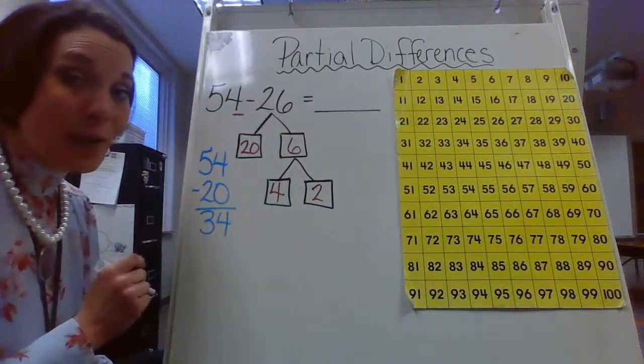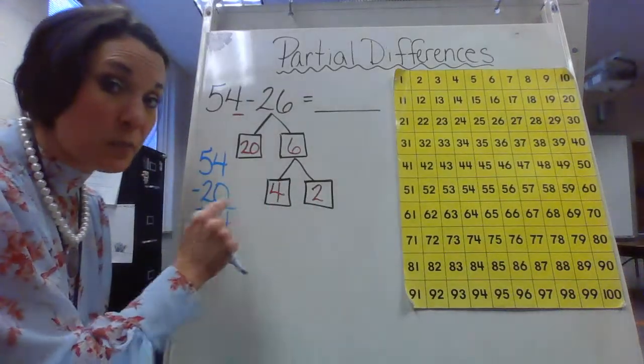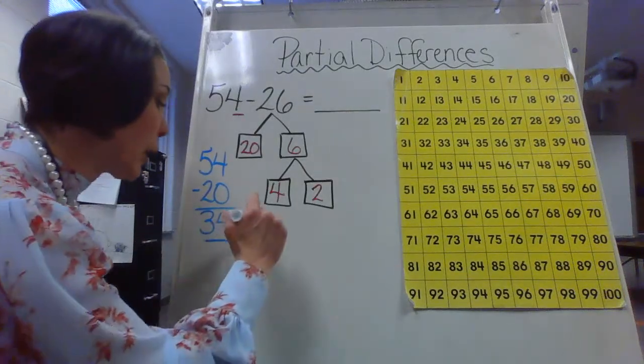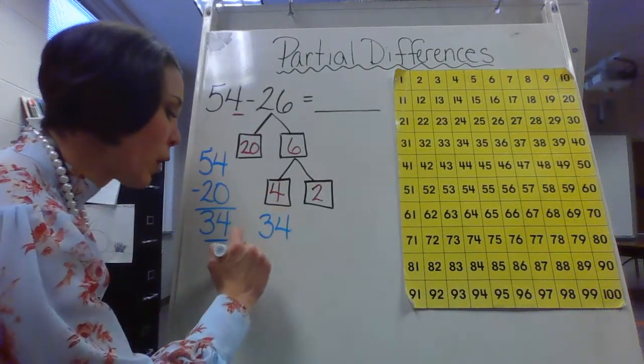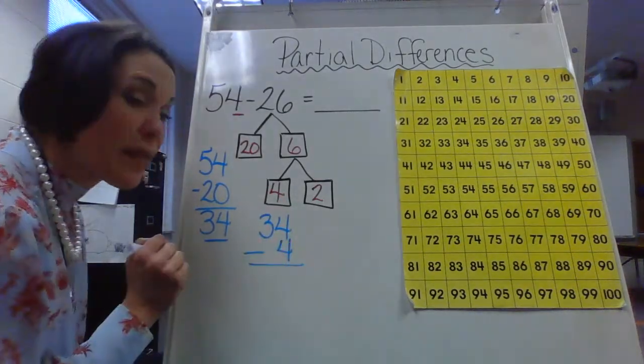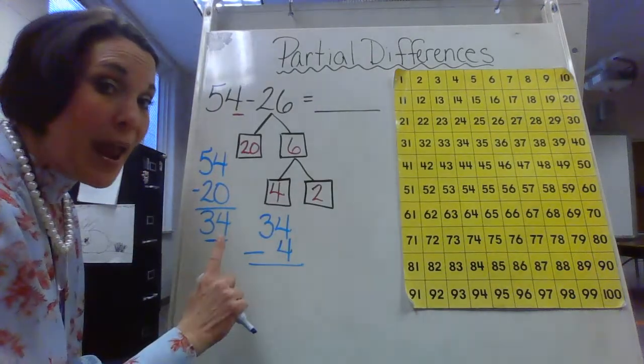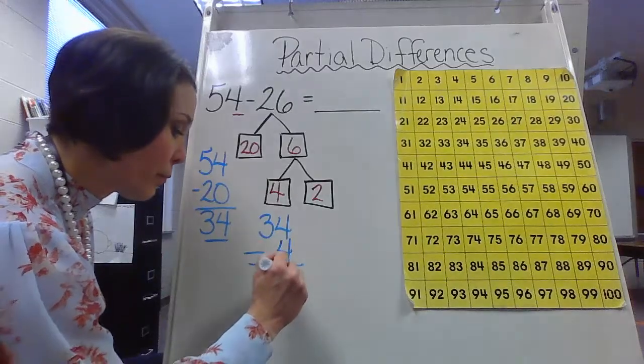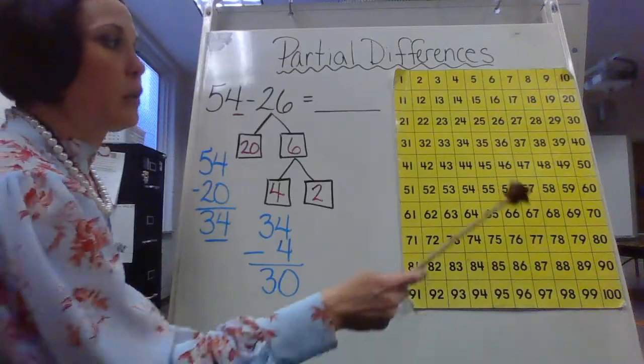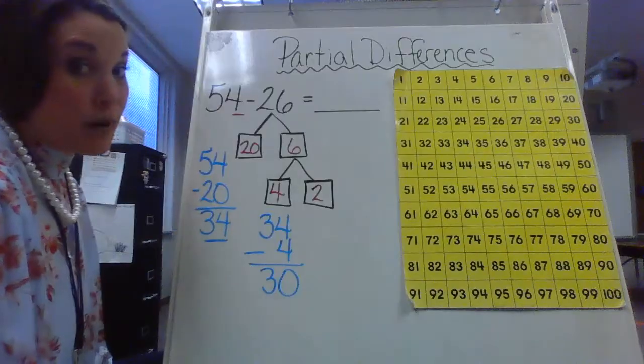However, I am not done because I still need to go ahead and subtract those numbers from my ones place. So I'm going to go where I left off, which is going to be 34. 34 take away four, because remember that's the one that matches, and it's going to change it from a 34 into a 30. So just to double check yourself, if I'm at 34 and I want to take away four: one, two, three, four. There's my 30.